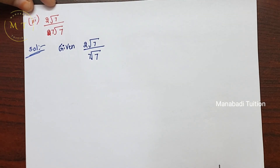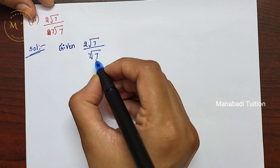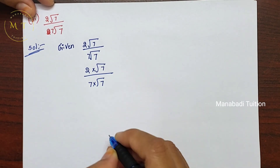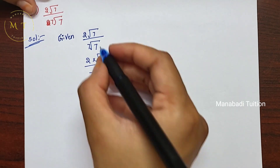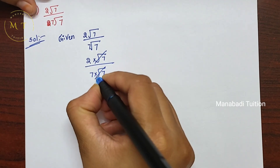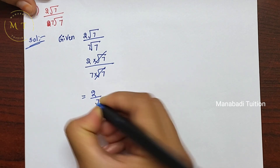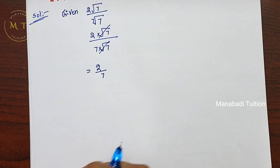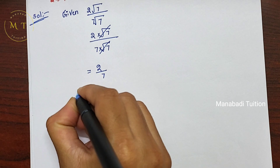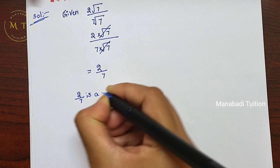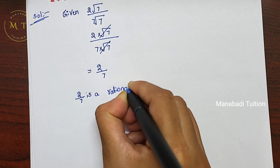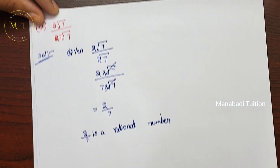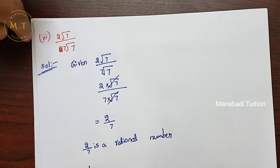Next, third one is 2 root 7 by 7 root 7. Given 2 root 7 by 7 root 7, we write it as 2 into root 7 divided by 7 into root 7. The root 7 in the numerator and denominator cancel. So we get 2 by 7, which is a Rational number — it is in P by Q form, a fraction formula.